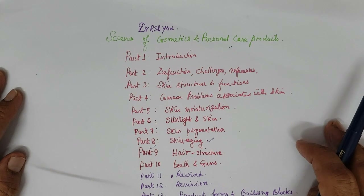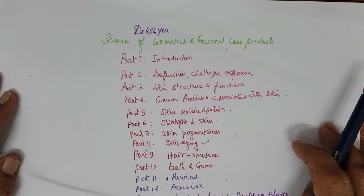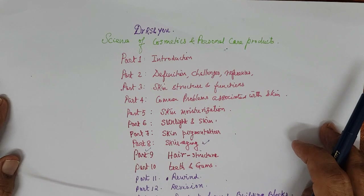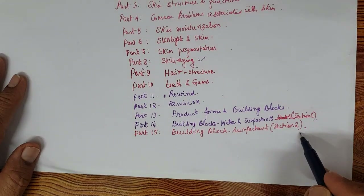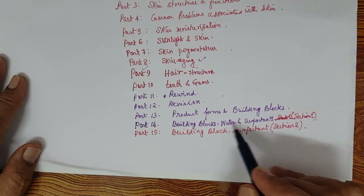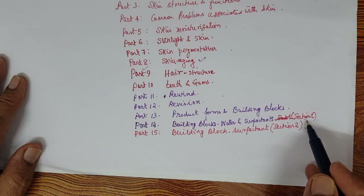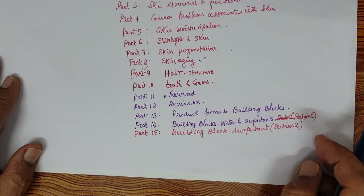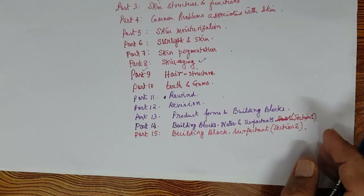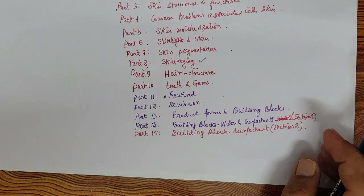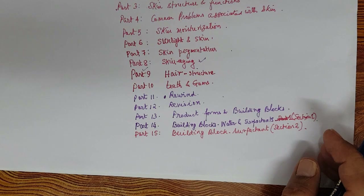Thank you for joining in another video on Dr. RS and the science of cosmetics and personal care products. Today we will be discussing building block surfactants, Section 2, Part 15. In Part 14 we discussed building blocks — water and surfactants Section 1 — how surfactants are classified, what defines a surfactant, and examples. Today we go into each classification — anionic, cationic, amphoteric, and non-ionic — with further sub-classification based on chemistry and application.